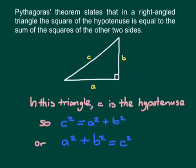Now this might sound very confusing to start with, but if we draw a right angle triangle — here we have the right angle and the triangle ABC. Then the longer side, C, we know is called the hypotenuse. So in this triangle, C is the hypotenuse.